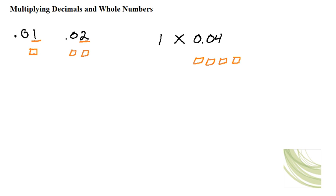We're multiplying it by one, and we know that any number times one is the same number. So one times four hundredths is four hundredths. It equals .04.